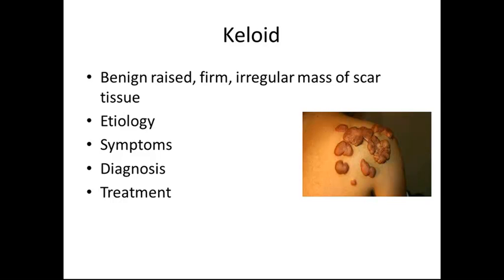Keloids are benign, raised, firm, irregular masses of scar tissue. The etiology is the overgrowth of collagen. Symptoms — they are unsightly masses but basically harmless. Diagnosis is by observation. We can treat keloids with radiation, steroid injections, or cryotherapy.